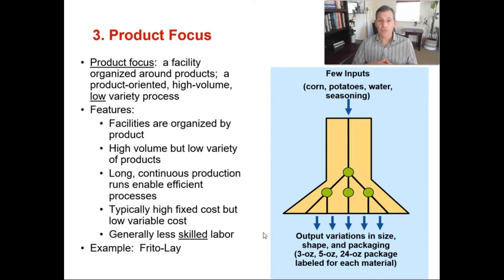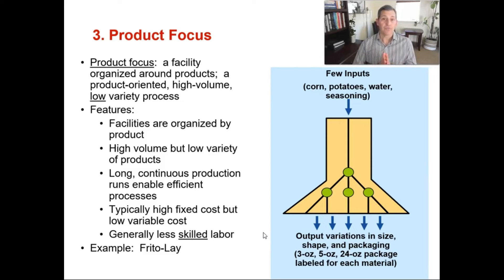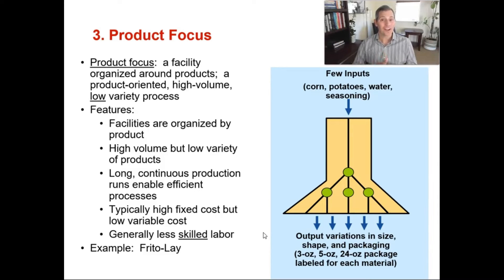An example of product focus is Frito-Lay. There are very few inputs — corn, potatoes, water, seasoning — let's call it 10 ingredients total. It goes into that product focus type of facility and there's very little difference in the output. You might have Frito-Lay in an individual size bag, a bigger bag, or a family size bag, but that's still the same product — just different packaging. So there's not a whole lot of variation between that type of product. That is a product focus.